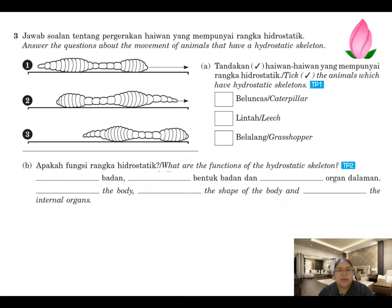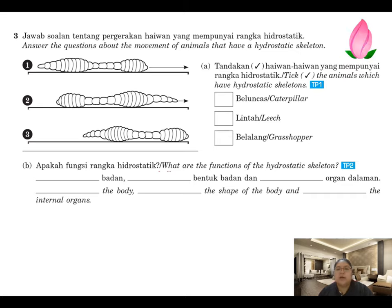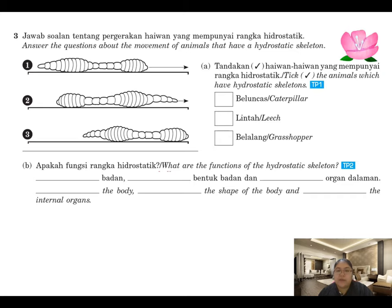Next, answer the question about movement in animals with a hydrostatic skeleton. Remember they have longitudinal muscles and circular muscles that contract and expand to enable movement. From the options given, the caterpillar has a hydrostatic skeleton, while the grasshopper does not — it has an exoskeleton. So the correct answers are the first and second options.